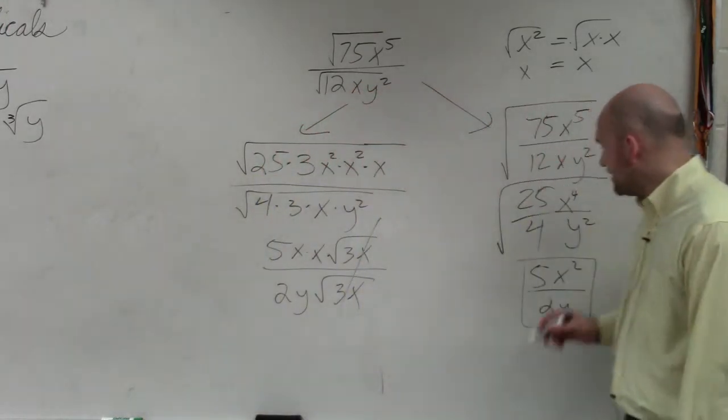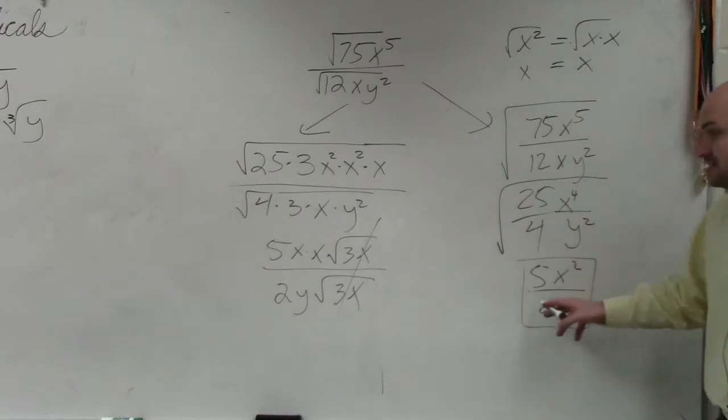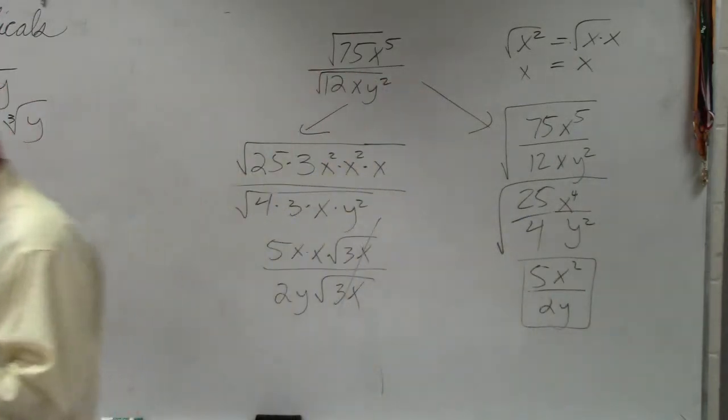Those divide out. And your final answer, again, is 5x squared divided by 2y. So you can simplify, which I prefer you guys doing before you divide. Or you can also just, as I mentioned, using the rules, put them under the same radical. I just want to show both sides so you guys can see.